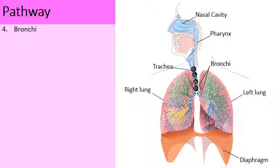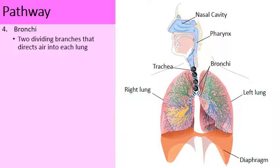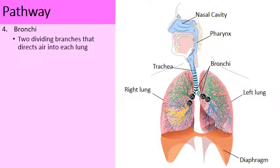As the air moves down the trachea, there's a fork in the road — two pathways. One bronchus leads into the right lung and one bronchus leads into the left lung. Some of the oxygen goes to the left bronchus and some goes to the right bronchus.